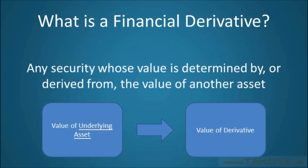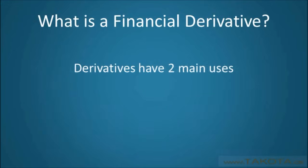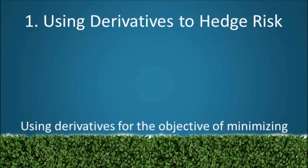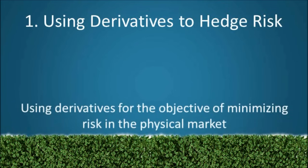So the change in the value of a derivative's underlying causes a change in the value of the derivative itself. This is all well and good, but what's the point of derivatives? Well, there are two main uses for derivatives. The first is to hedge risk. Derivative hedging generally refers to the practice of using derivatives for the objective of minimizing risk in the physical market.